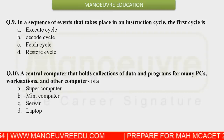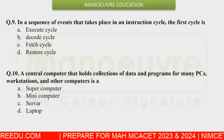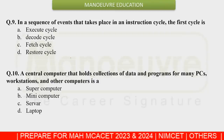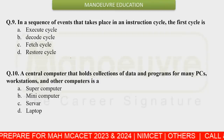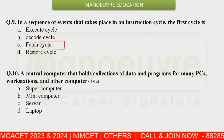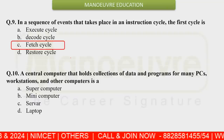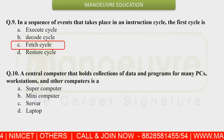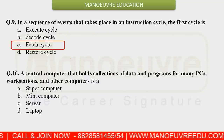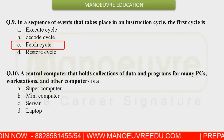The next question was about the fetch-execute cycle — types of instructions that happen inside the computer. The first cycle that always executes is the fetch cycle, followed by the execute cycle.